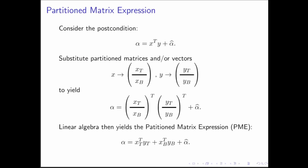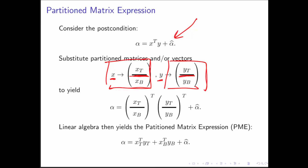Here comes the important part. What we want to do is come up with the loop invariant. The loop invariant is the statement that allows us to invoke the principle of mathematical induction. It tells us what is in alpha as the loop executes. The one thing we know about x and y is that we're going to systematically march through them, partitioning the vectors x and y into a top part and a bottom part. We can take the result of this partitioning, plug it into our postcondition, and we get this result right here.